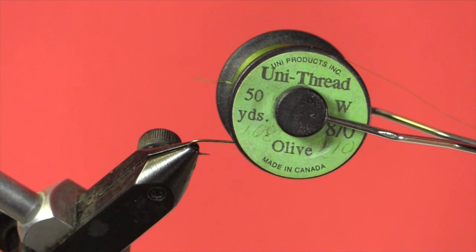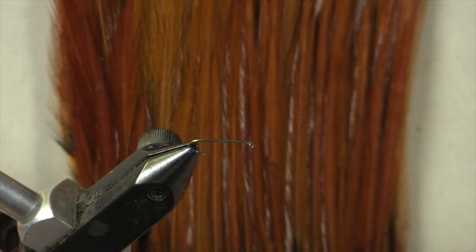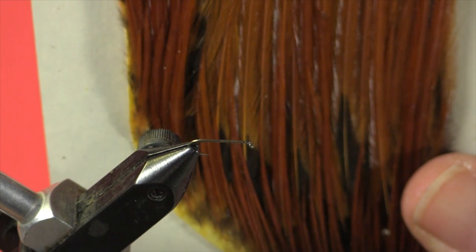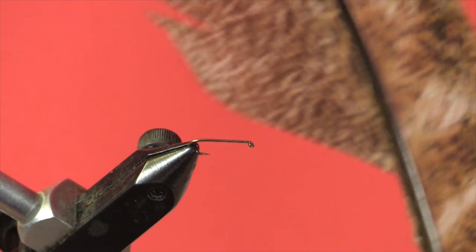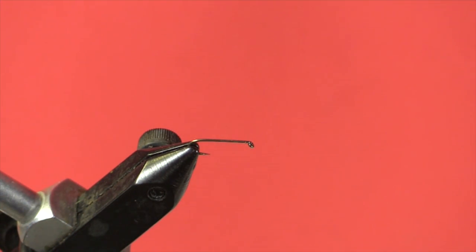Our thread is olive 8-aught. Our dry fly hackle is brown and we're going to use some of these shorter feathers, and our wing is a turkey quill. The body is caddis green and we're going to dub that.